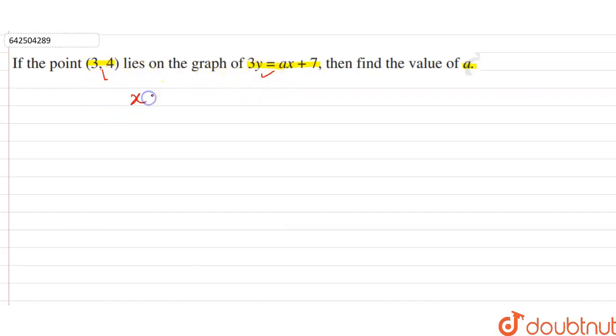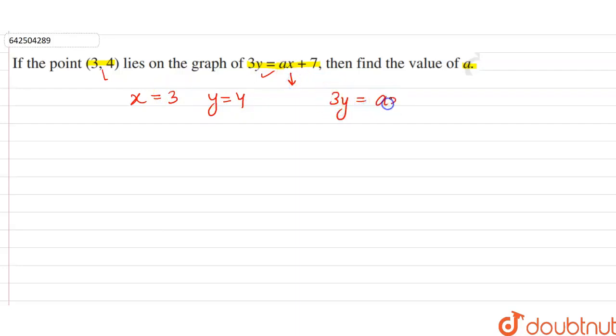So for that, we have to substitute the value of x as 3 and substitute the value of y as 4 in the given linear equation, which is 3y = ax + 7.